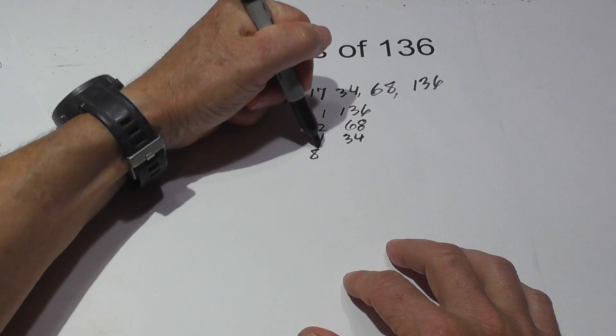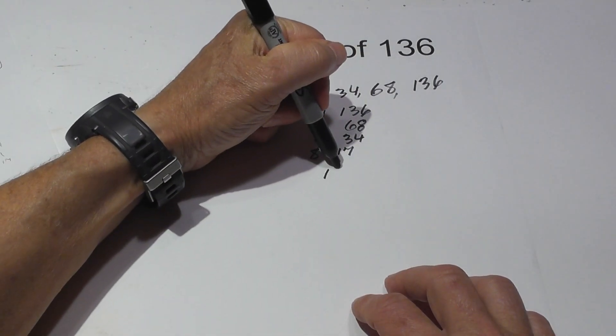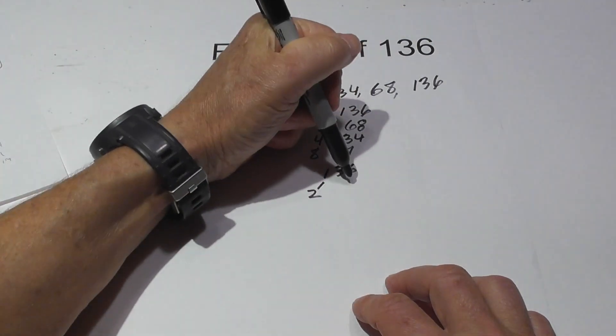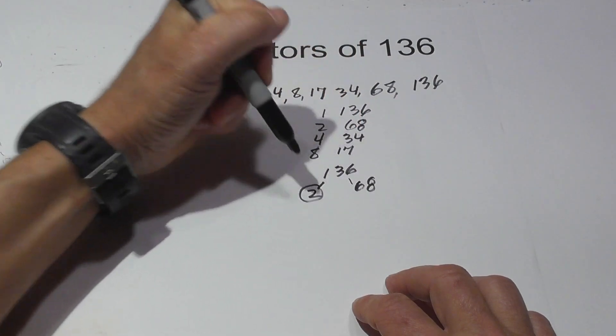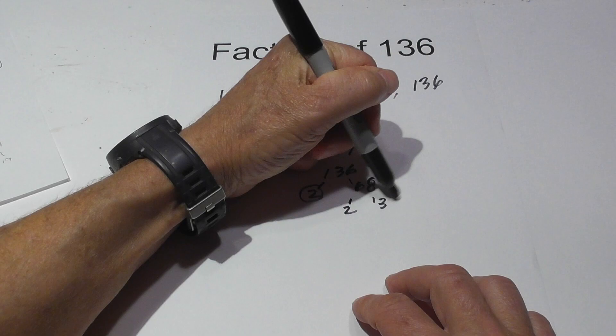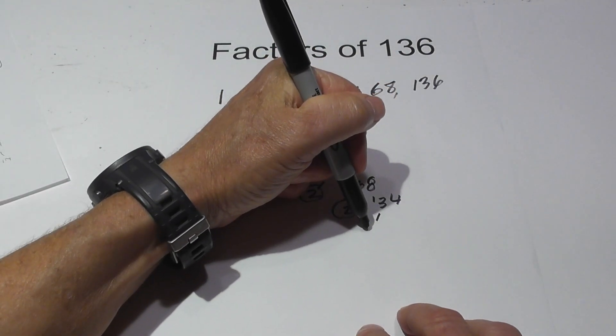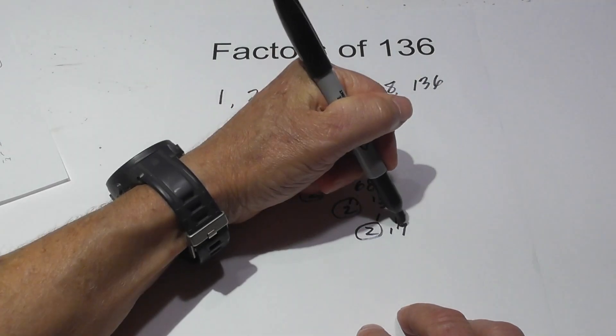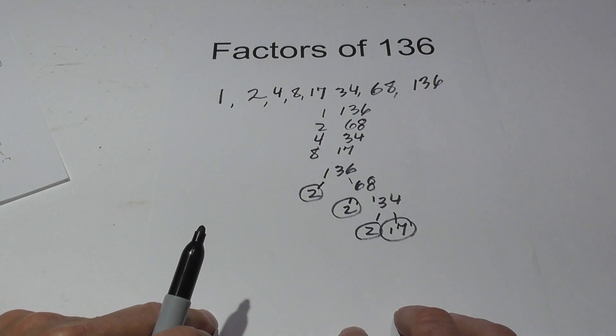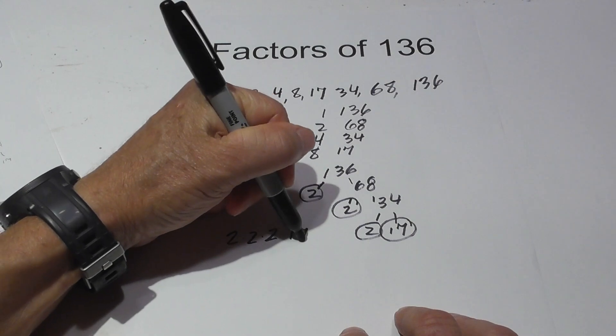And then if you complete a factor tree, let's begin with 2 because it's an even number. 2 times 68, circle the 2 because it is prime. And now 2 times 34, circle the 2 because it is prime. And now 2 times 17, circle both of these because they are prime.